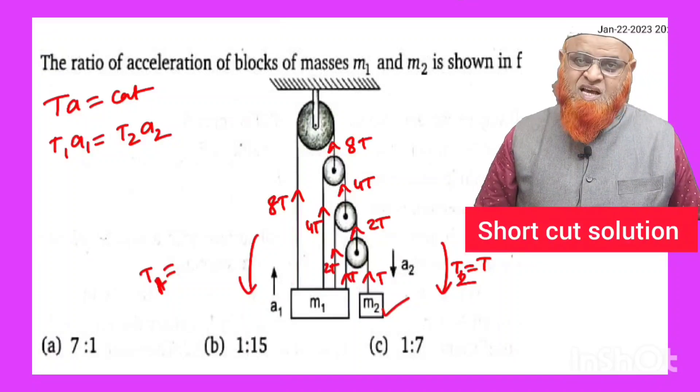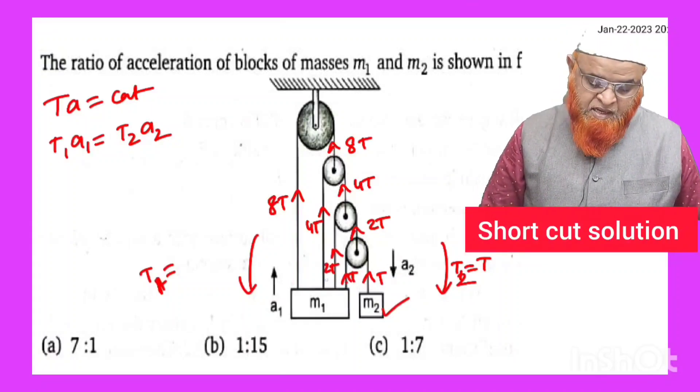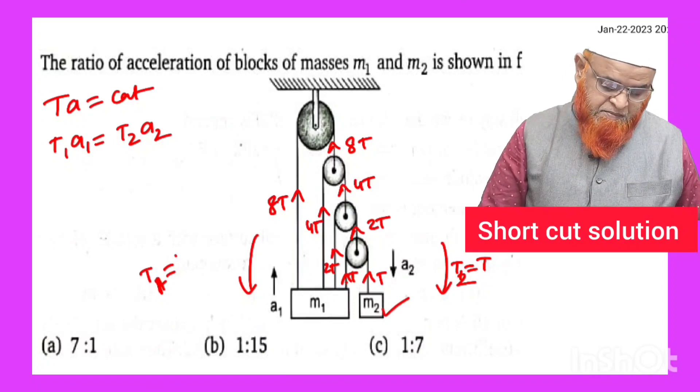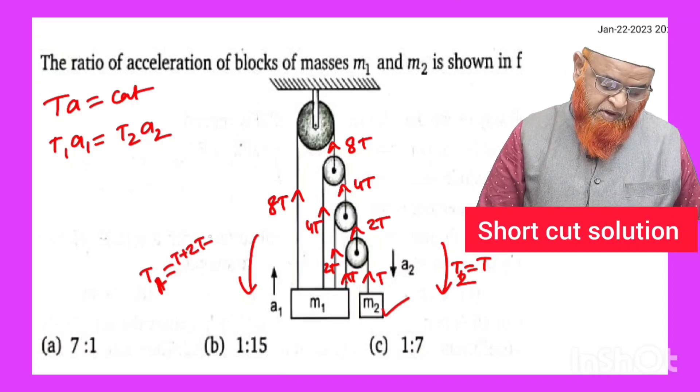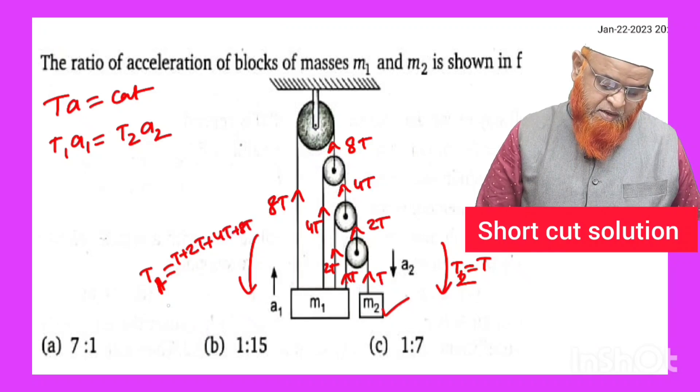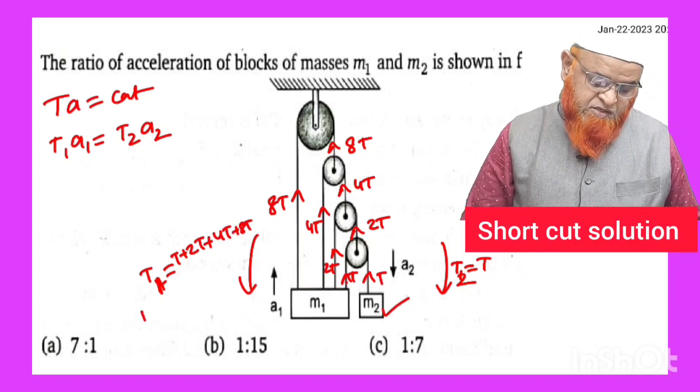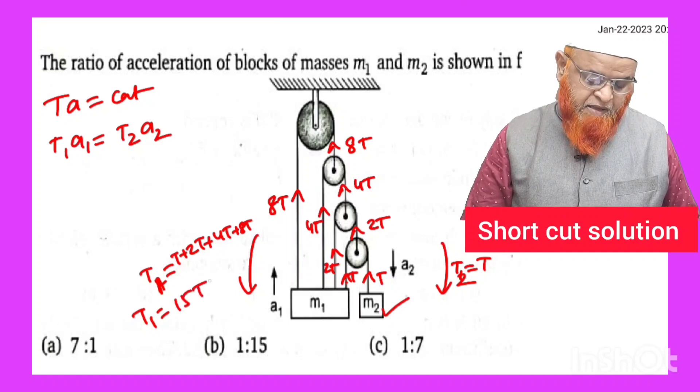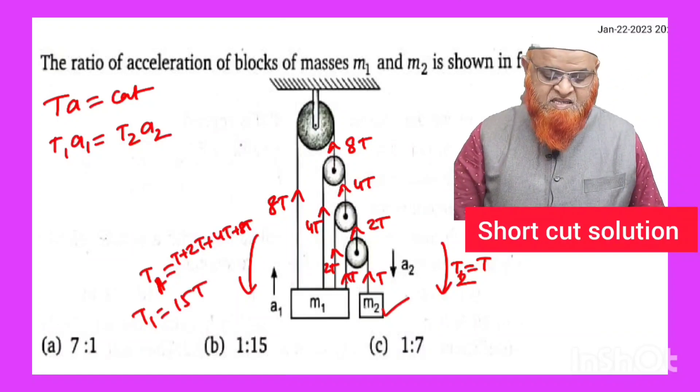And how many tensions are there in the anti-clockwise direction? T plus 2T plus 2T plus 4T plus 8T. So totally it is going to be T1 is going to be 15T, whereas T2 at the right side.